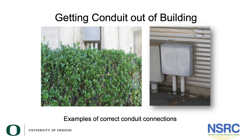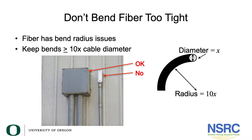Getting conduit in and out of a building: it's important that you enter a building in such a way that you don't allow rodents or water to get in. These are weatherproof boxes placed on the side of the building, with a hole drilled out the back for the cable to enter. This also counts as a pull point — you can remove the lid, pull on the conductor, and then route it inside the building.